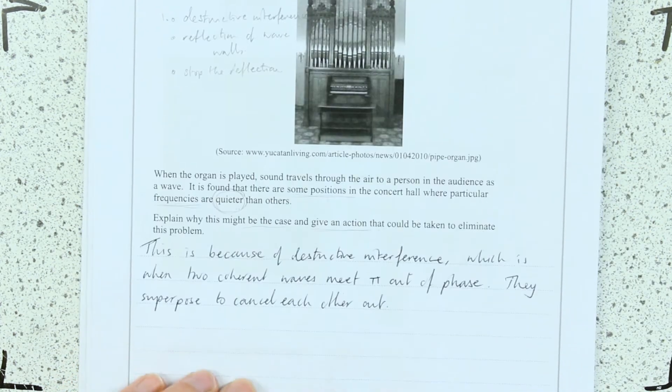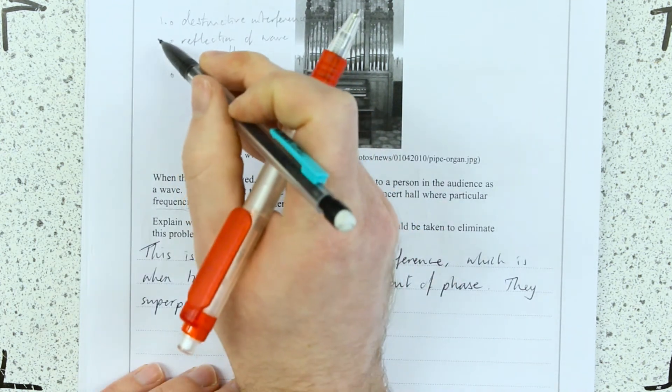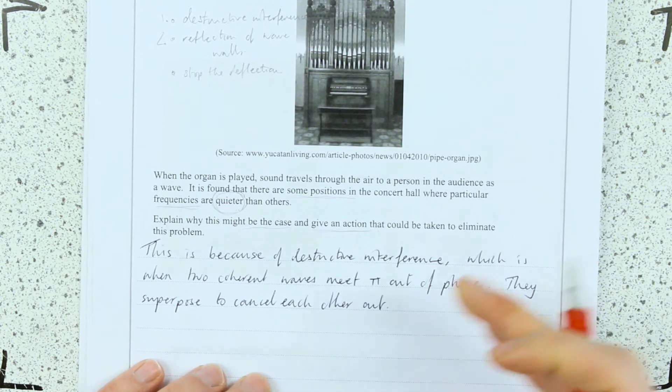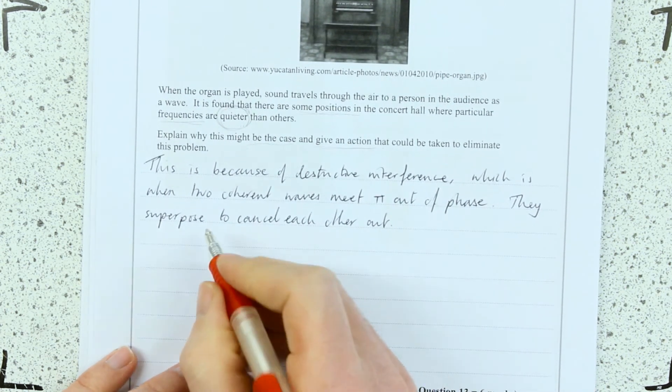They add to zero or they superpose to cancel each other out. The sound wave from the organ, this is my second part now, is reflected from the walls of the building.